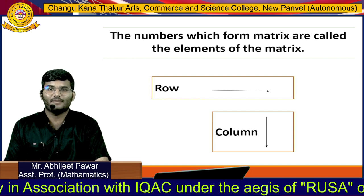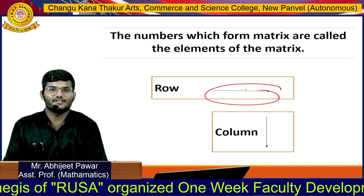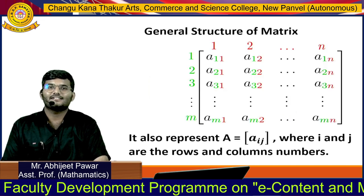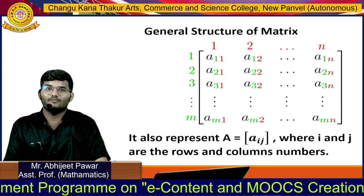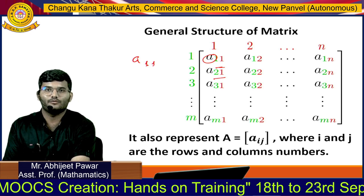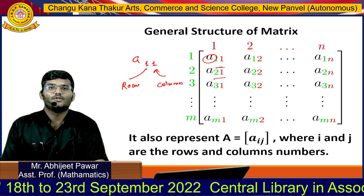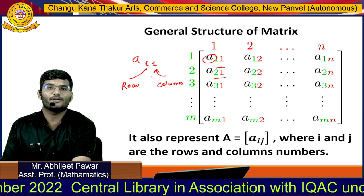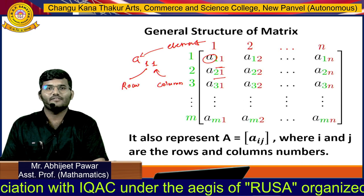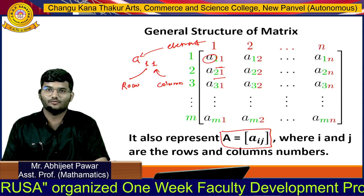The numbers which form a matrix are called the elements of the matrix. The elements are generally represented by rows and columns — rows are horizontal and columns are vertical. For more detail, this is the general structure of matrices where A₁₁ — the first suffix represents the row and the second represents the column. These two suffixes represent first the row and second the column. In general, A is known as the element. A matrix is represented in abbreviation as A = [Aᵢⱼ] where i and j are the row and column numbers.